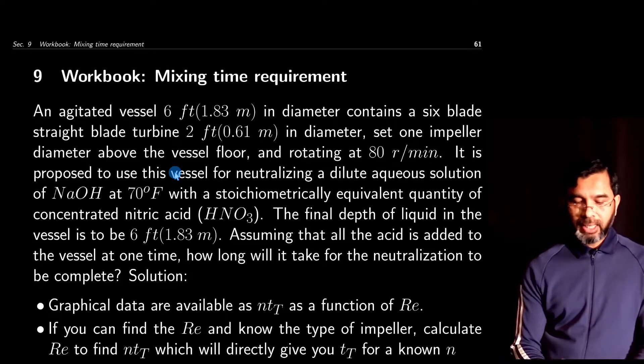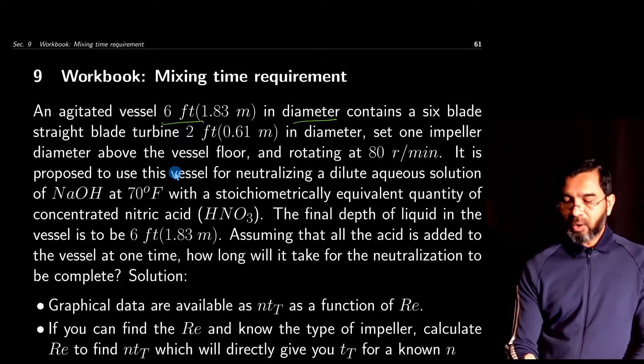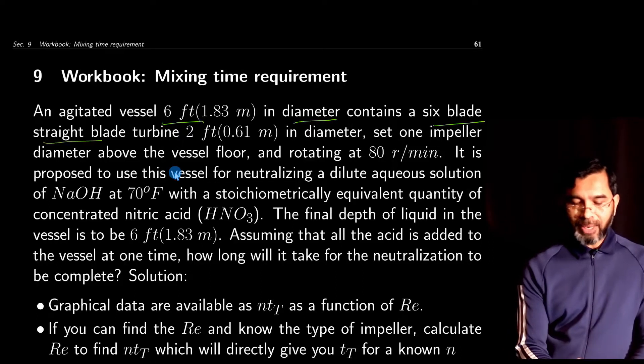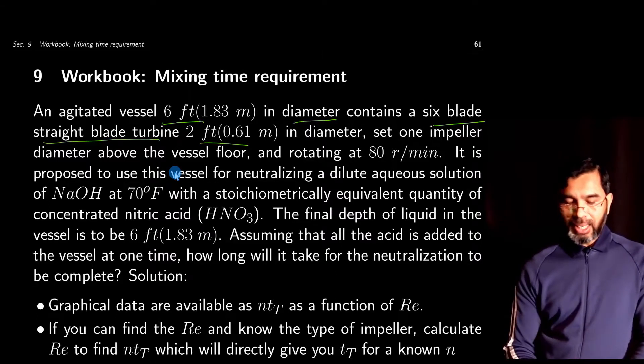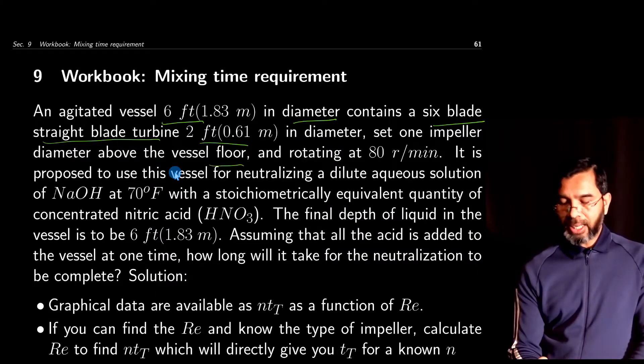Here is the problem statement. An agitated vessel 6 feet in diameter (Dt) contains a six-blade straight blade turbine 2 feet in diameter (Da), set one impeller diameter above the vessel floor, and rotating at 80 rpm.